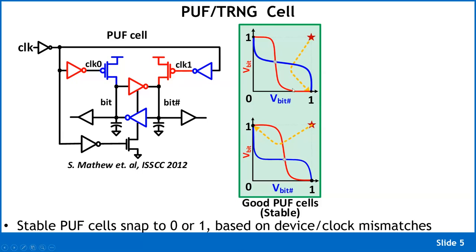If the butterfly curve leans one way, the PUF cell consistently produces a zero; if the other way, consistently a one. Random process variation gives you one or the other butterfly curve — these are good PUF cells because there is a clear mismatch. Across different dies, some cells behave one way and others the other way — that is where the randomness in space comes from.